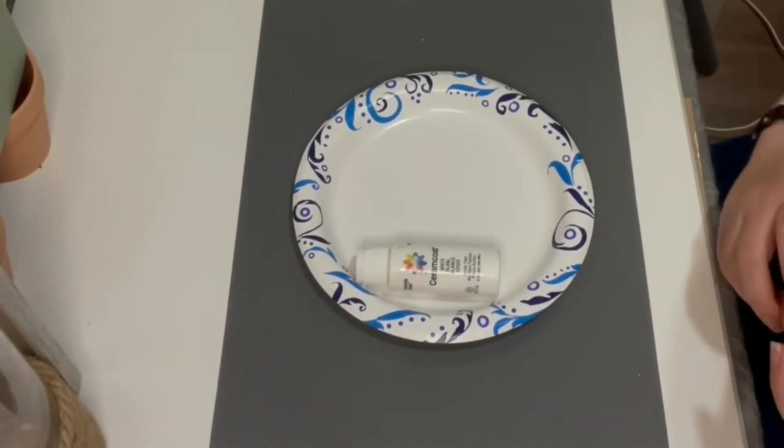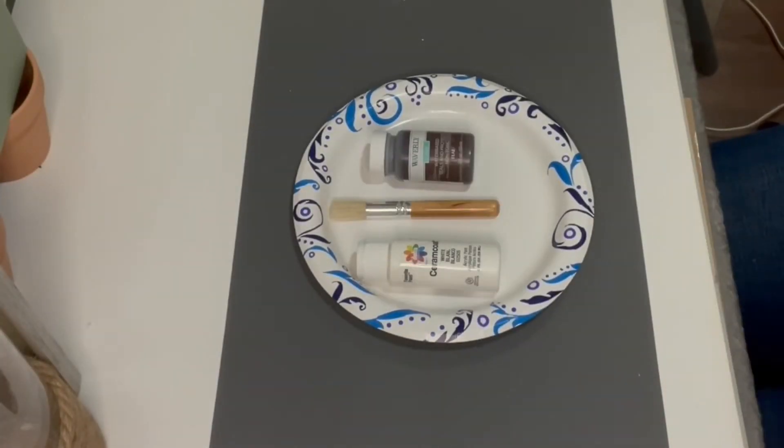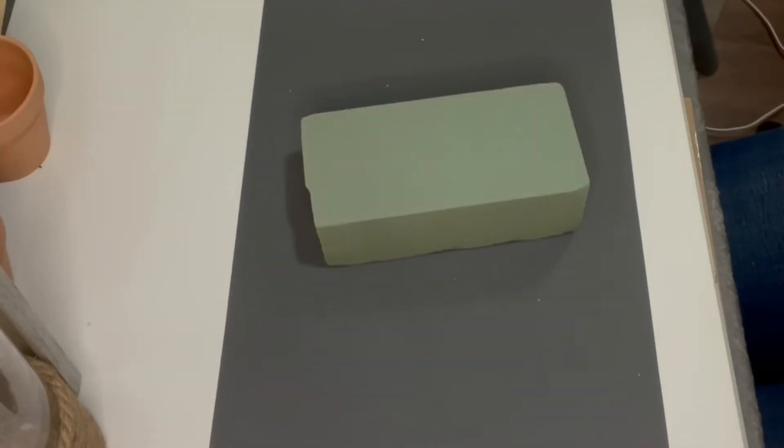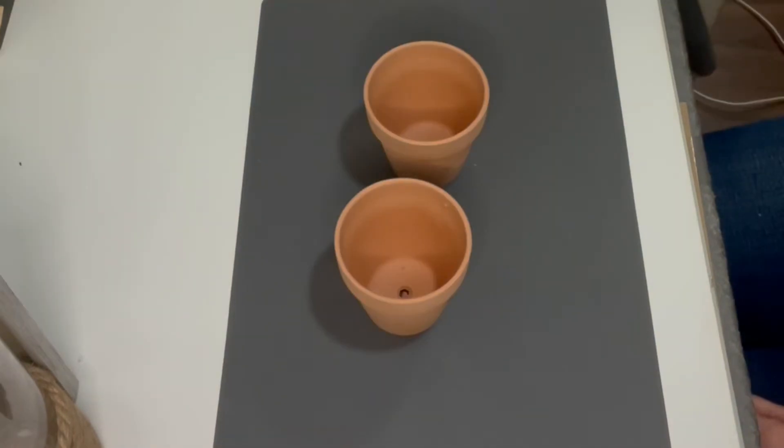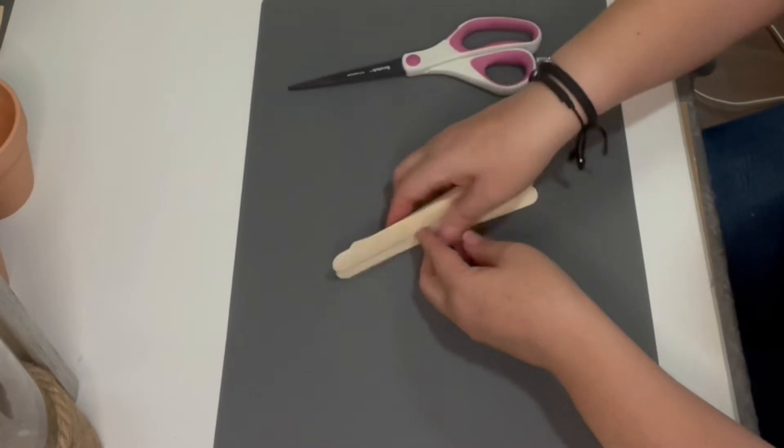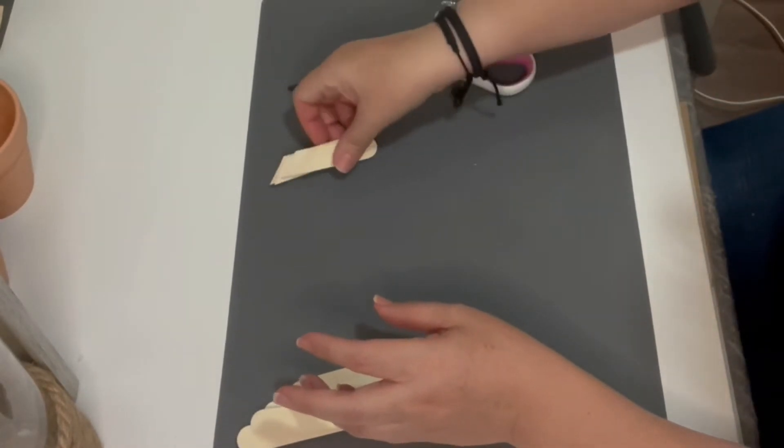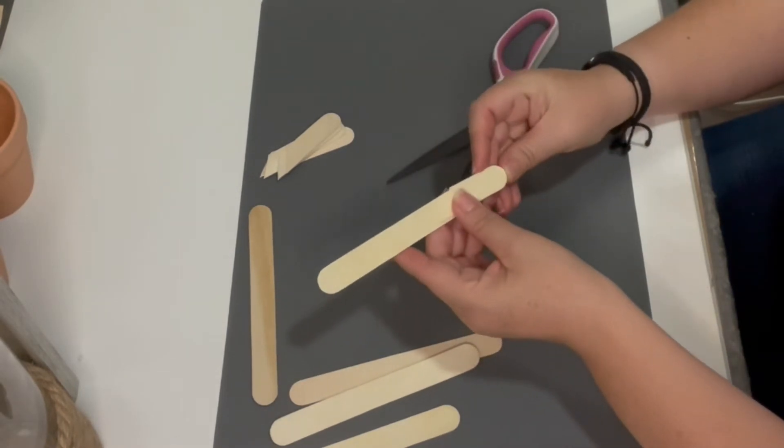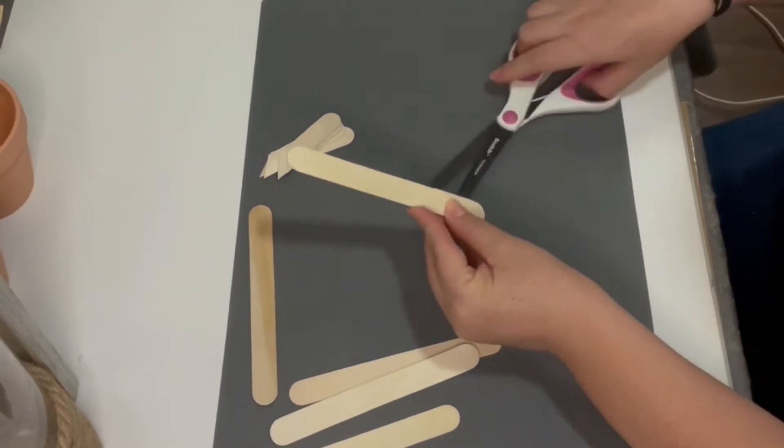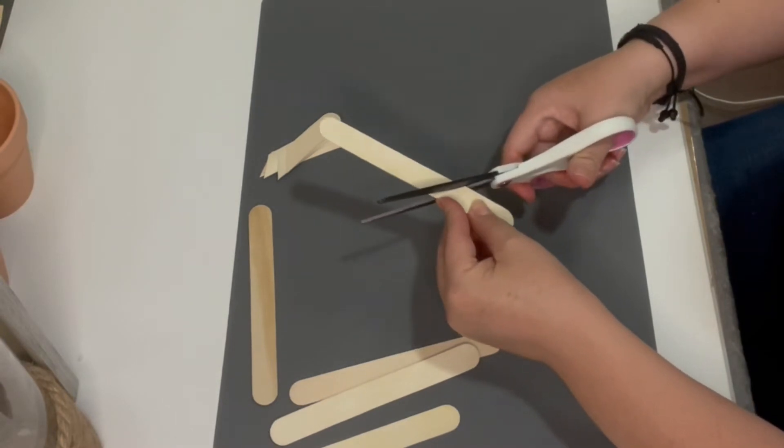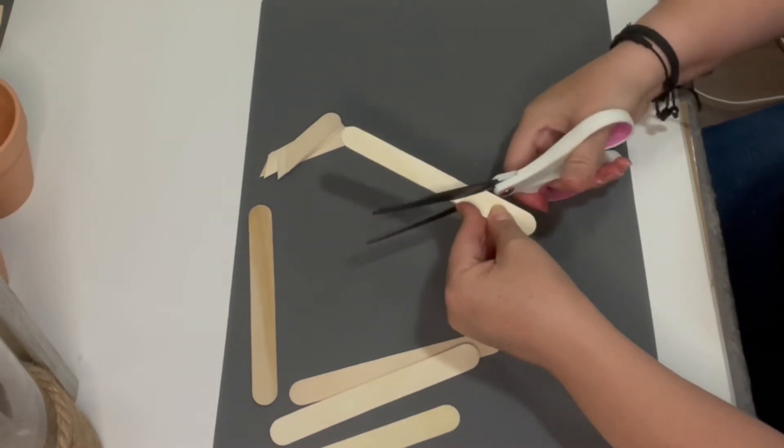For this next project we're going to use a variety of paints, a paint brush, and for the first time ever some of this Waverly wax which I totally fell in love with. Then some floral foam, some terracotta pots and popsicle sticks. I already pre-cut one set of these popsicle sticks and I'm just going to use them as templates for my next set. I'm going to make two Christmas trees out of these popsicle sticks.